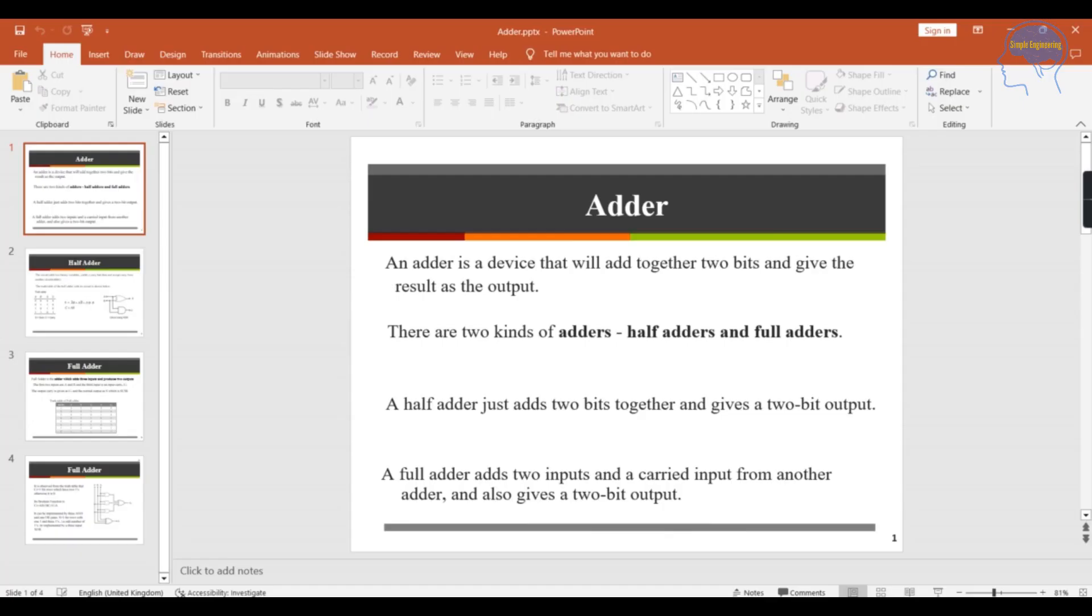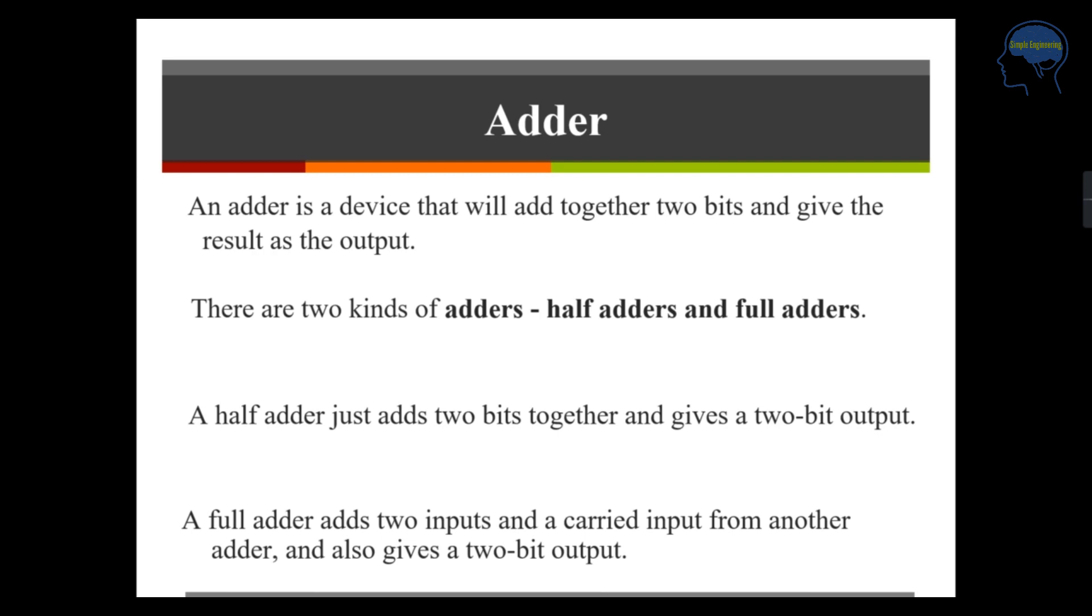Let's move to the video. An adder is a device that will add together 2 bits and we will get an output that is a result of the addition of 2 bits. There are two types of adders, one is half adder and full adder.